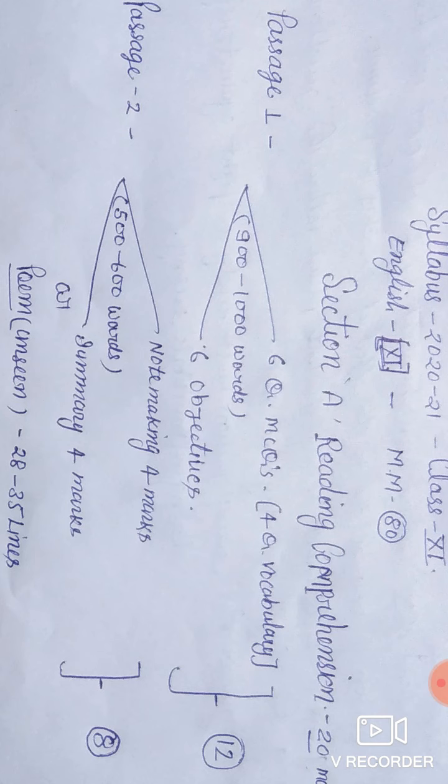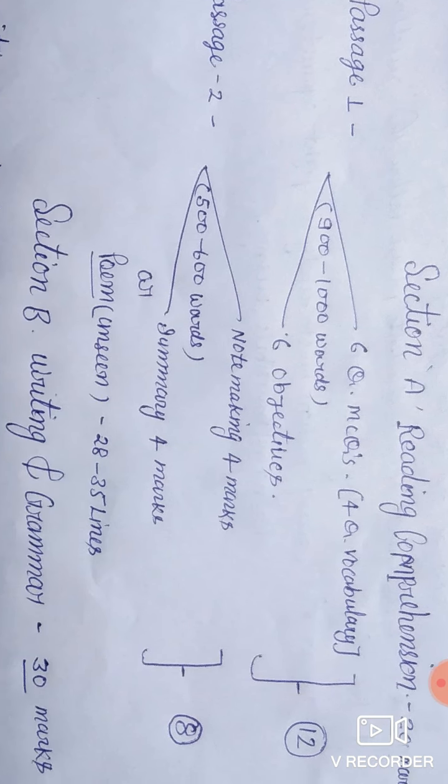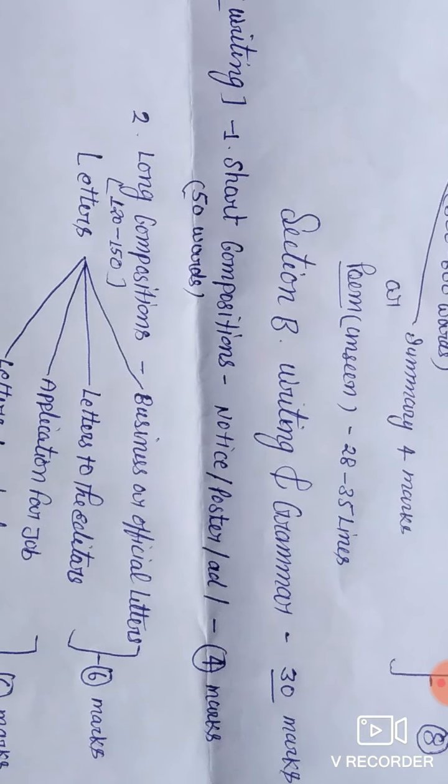Now some changes in this section: an unseen poem is included. It has 28 to 35 lines. So now let's move to the next section.